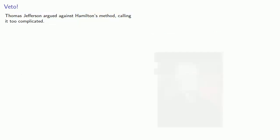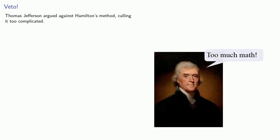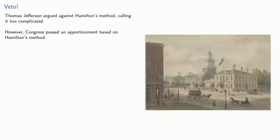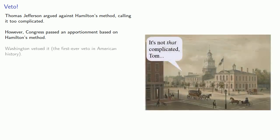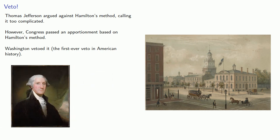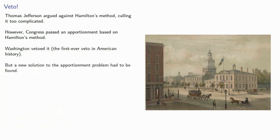Thomas Jefferson argued against Hamilton's method, calling it too complicated. However, Congress passed an apportionment based on Hamilton's method, but Washington vetoed it, the first ever veto in American history. The veto meant that a new solution to the apportionment problem had to be found.